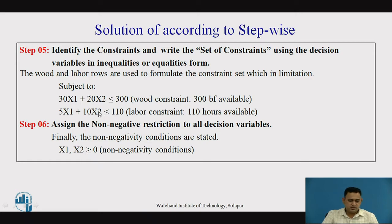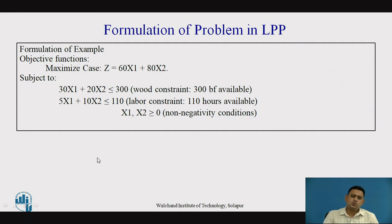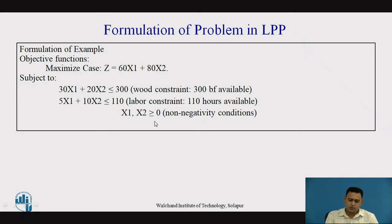These are the two constraints, and finally we give the non-negativity restriction to the two variables: x1, x2 ≥ 0. The complete formulated problem is: Maximize Z = 60x1 + 80x2, subject to: 30x1 + 20x2 ≤ 300, 5x1 + 10x2 ≤ 110, and x1, x2 ≥ 0.